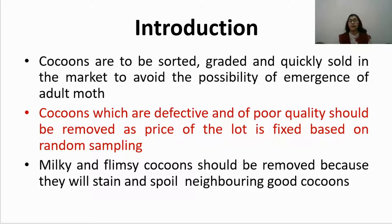Cocoons are to be sorted, graded and quickly sold in the market to avoid the possibility of emergence of adult moth. If we are late in selling the cocoons, the pupa will metamorphose into adult, pierce the cocoon and come out, making such cocoons useless. Cocoons which are defective and of poor quality should be removed, as price of the lot is fixed based on random sampling, so the whole lot should be of good quality.